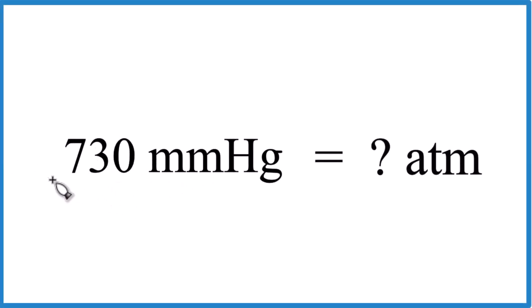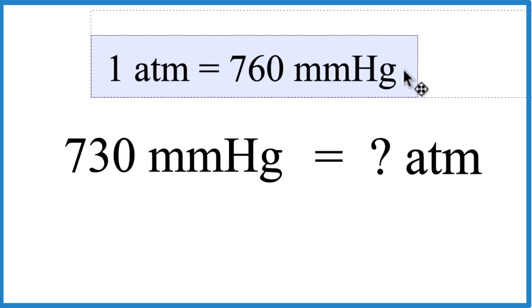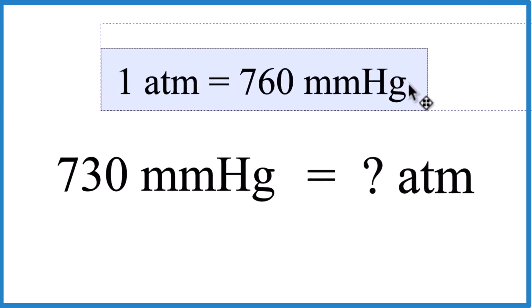So here's how you convert 730 millimeters of mercury to atm, that's atmospheres. What we need to know is a conversion factor. You either memorize that one atmosphere is 760 millimeters of mercury, or if you're allowed, you can look it up.